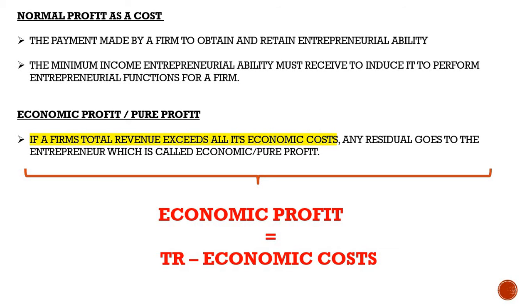Normal profit is a cost — it is the remuneration for entrepreneurship, a payment made by a firm to obtain and retain entrepreneurial ability, like paying an entrepreneur a salary. It is the minimum income entrepreneurial ability must receive to perform entrepreneurial functions. Economic profit, or pure profit, is when a firm's total revenue exceeds its economic costs — it is the difference between total revenue and economic costs.